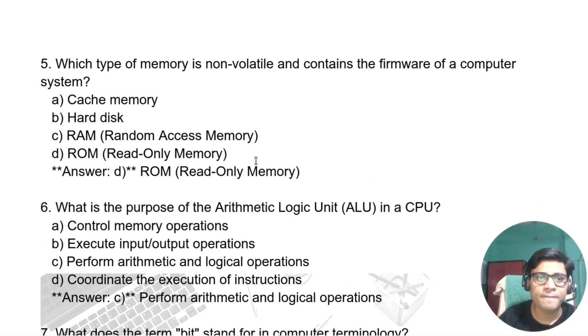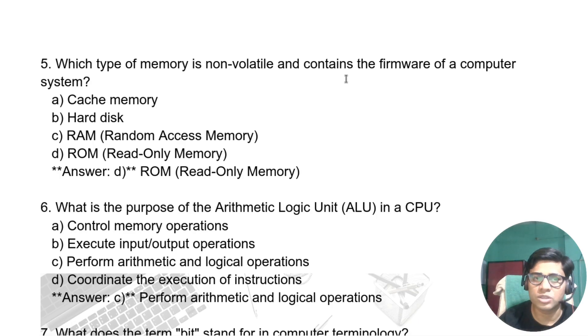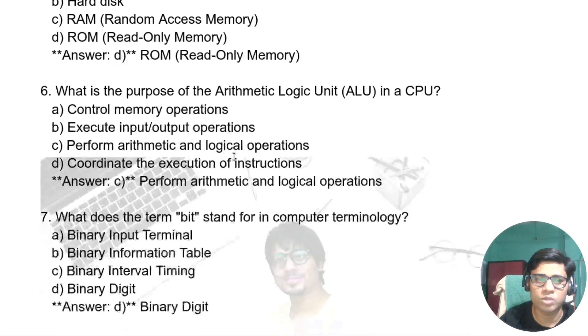Which type of memory is non-volatile and contains the firmware of the computer system? Non-volatile means it is permanently saved. Whatever built-in software is present is also called ROM, or read-only memory.